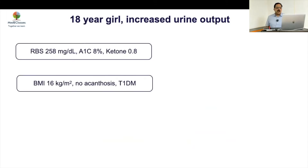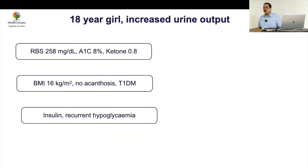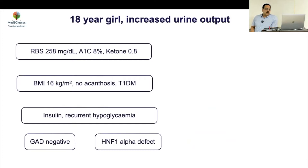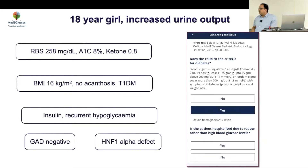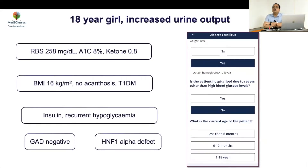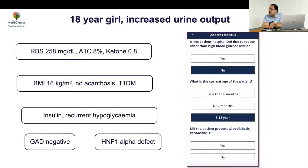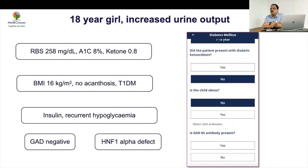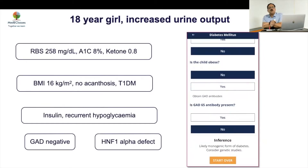Case 2: an 18-year-old girl with increased urine output was labeled as Type 1 diabetes even though there was no DKA and she was a lean individual. GAD was negative and she turned out to be a MODY form. In someone without DKA who is non-obese, the key parameter is GAD antibody — if negative, go for genetic body testing.